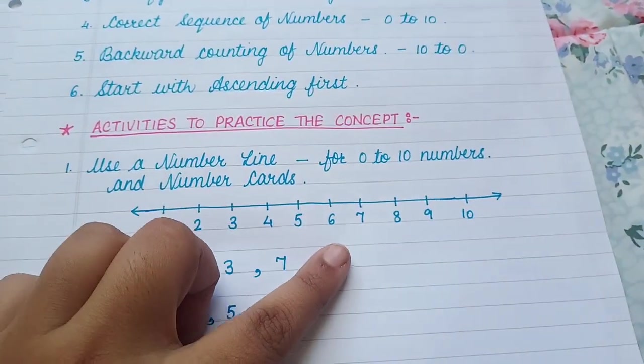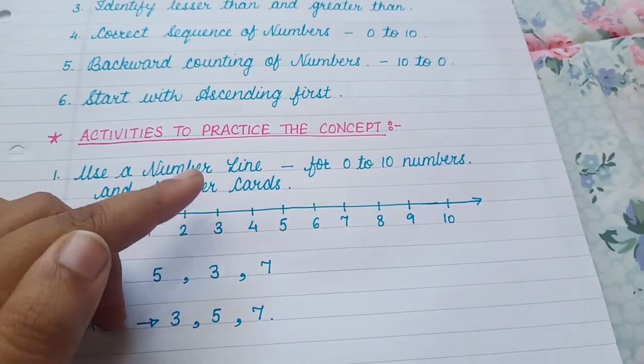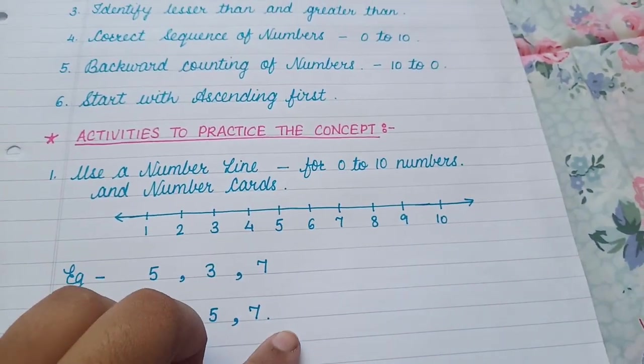So the child will go through the number line and see which number comes first, so 3. After that, 5 and after that, 7. So 3, 5, 7.